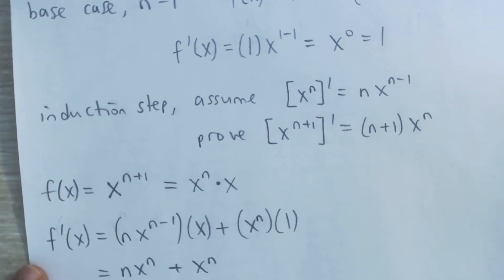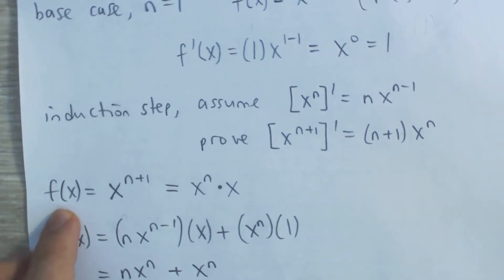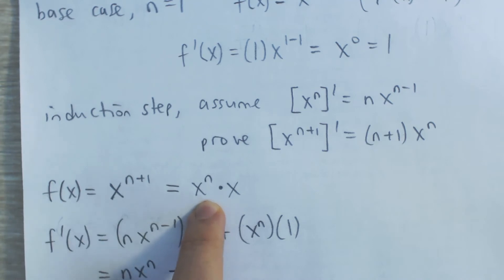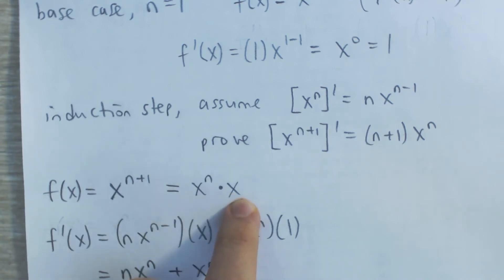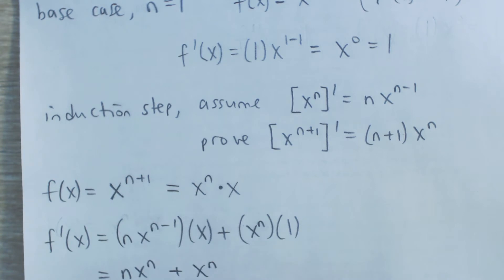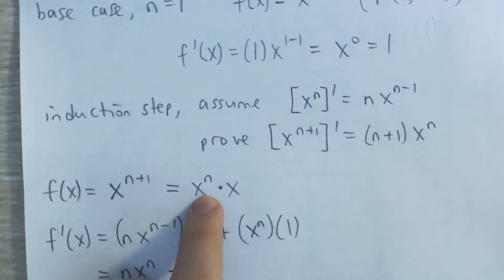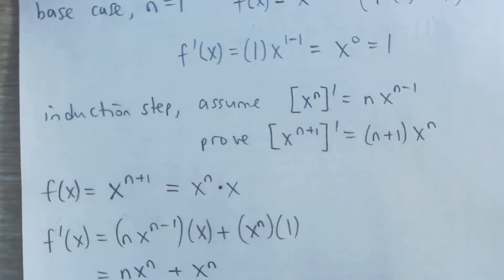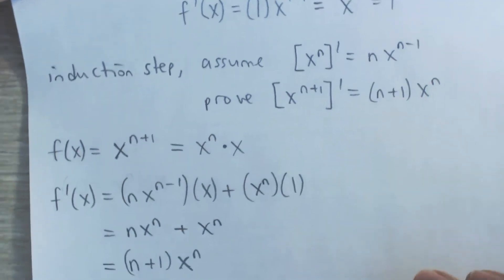So here we go. We have the function f of x which is x to the n plus 1, and we can rewrite this as x to the n times x. Now why would we want to do that? Now we have a product of two functions and we can use the product rule. The product rule has the derivative of x to the n in it, and we are given what that derivative is, so that's going to help us in solving this.